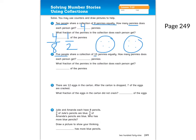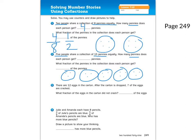Five people share a collection of 15 pennies equally. How many pennies does each person get? Go ahead and push stop while you do this problem, then check with me. Each person gets three pennies. What fraction of the pennies does each person get? They're getting three out of 15 pennies. Another fraction you could use is one-fifth, if you were thinking equivalent fractions.